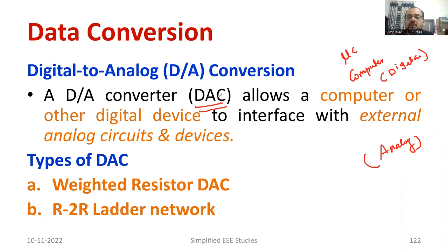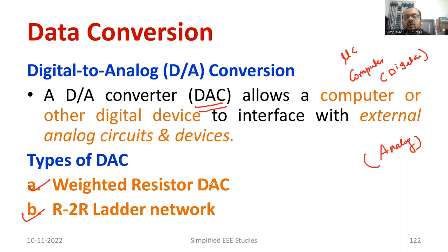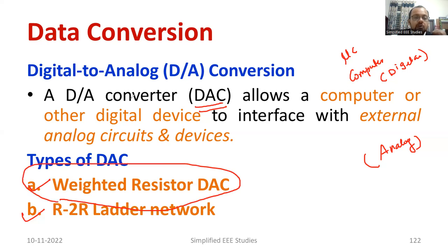There are various methods available to convert digital information to analog information, such as weighted resistor DAC and R2R network DAC. DAC stands for digital to analog conversion or converter — if it is a device, it is called a converter; if it is a process, it is called conversion. In this session, I am going to focus on the weighted resistor DAC.